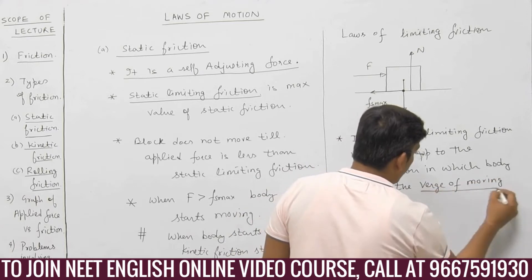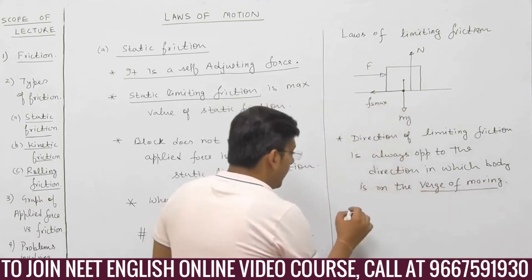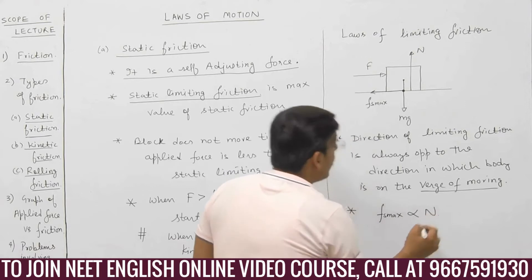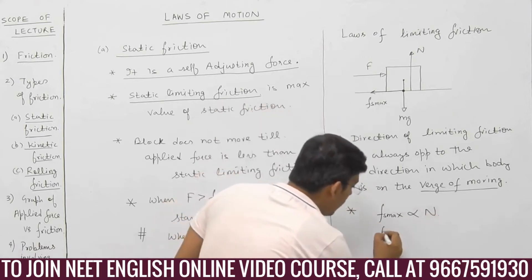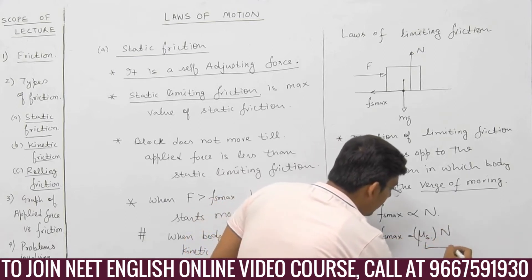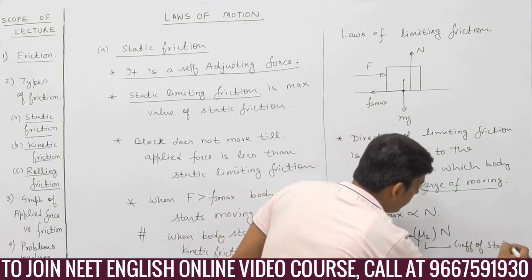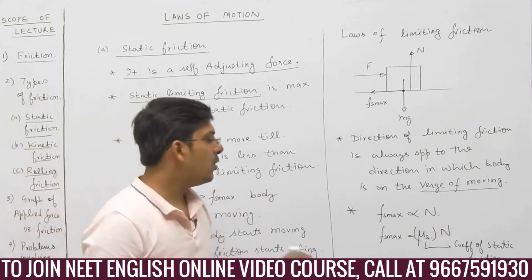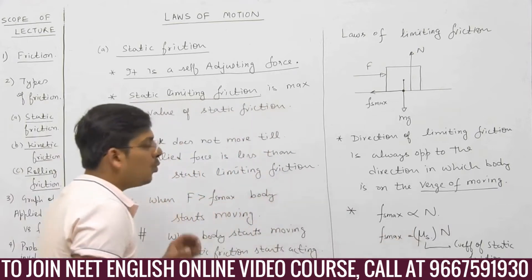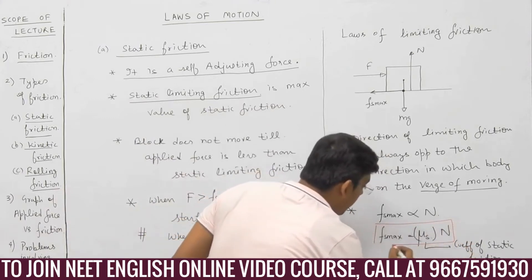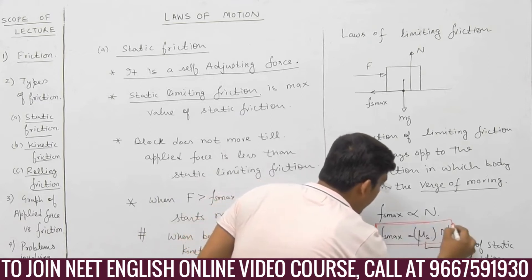Verge of moving means just about to move. The second very important law is that static limiting friction is directly proportional to the normal reaction. When you remove the proportionality sign, we add a constant mu s. Mu s is the coefficient of static friction, and it depends on the nature of surfaces in contact. So static limiting friction equals mu s multiplied by normal reaction — this is a very important point.